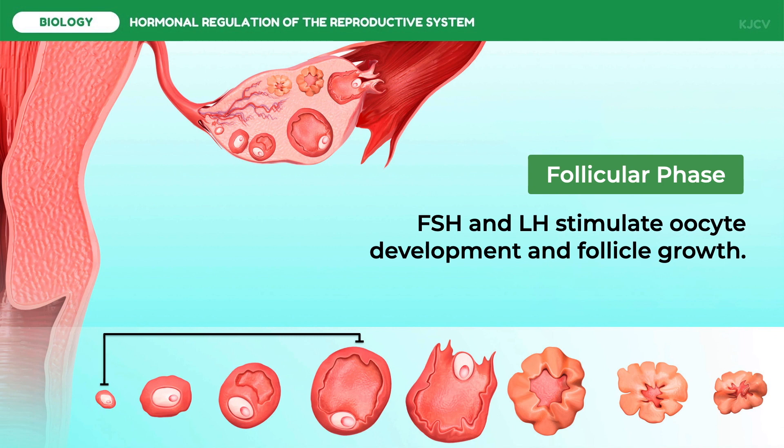Another layer of cells called the theca cells provides structural integrity for the follicle near the basement membrane. The theca and granulosa cells, collectively known as follicular cells, function as a unit to secrete estrogen. Of the three physiologically important estrogens — estradiol, estrone, and estriol — estradiol is the principal ovarian estrogen.